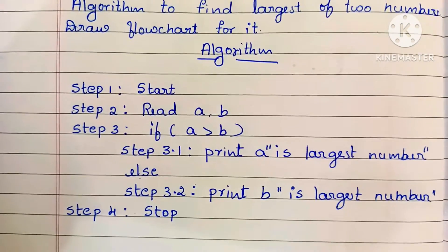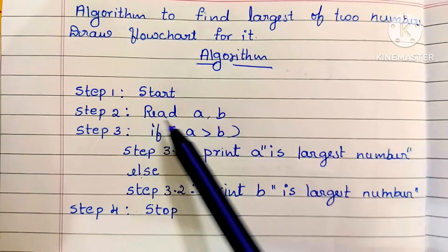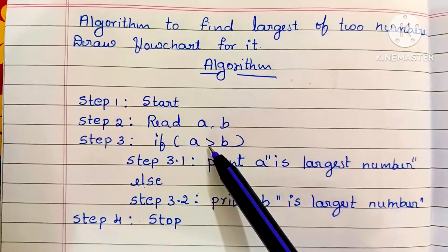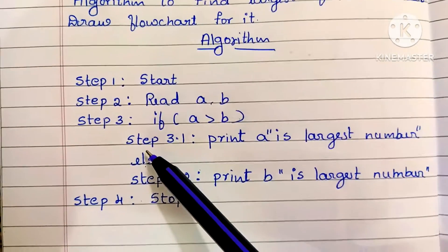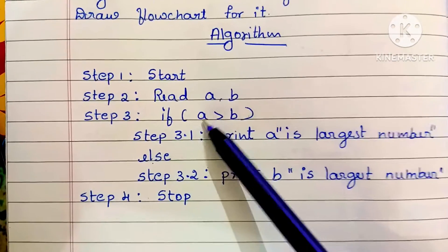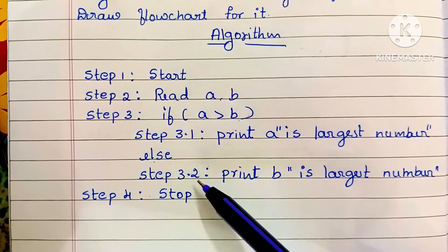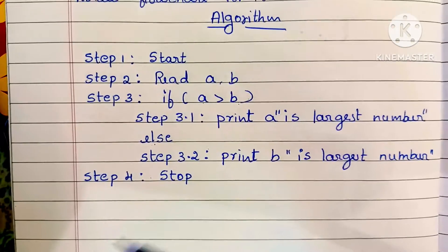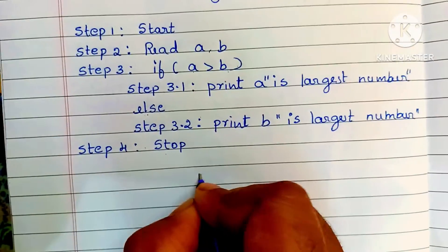To recap the algorithm: Step 1 — start statement. Step 2 — read variables a and b. Step 3 — if a greater than b is true, step 3.1 prints 'a is largest number'; else, step 3.2 prints 'b is largest number'. Step 4 — stop statement. Next, we draw the flowchart.